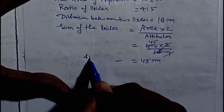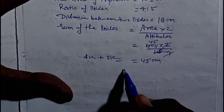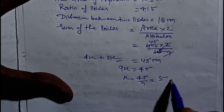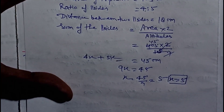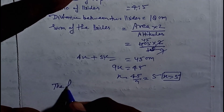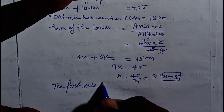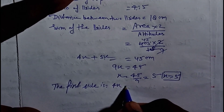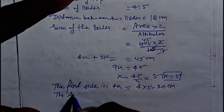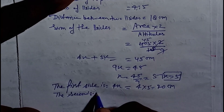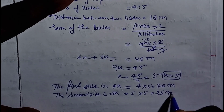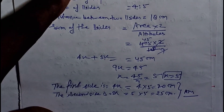Yahan par first side ko let kar do 4x aur second side ko 5x. To 4x + 5x = 9x is equal to 45. Then x is equal to 45 ÷ 9 = 5. x ki value 5 aa gayi. The first side is equal to 4x = 4 × 5 = 20 cm. And the second side is equal to 5x = 5 × 5 = 25 cm. Aur yahi beta aapka answer jayega.